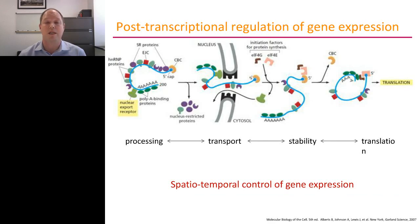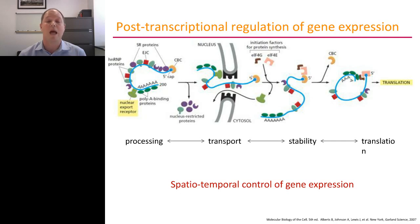All of these processes are part of the post-transcriptional regulation of gene expression, which is, in my view, as important as transcriptional regulation. Once you have an mRNA being transcribed within the nucleus, it's being processed — processing might be, for example, splicing. After processing, the mRNA is exported into the cytoplasm, and a partially overlapping set of trans-acting factors bind to the mRNA. Together they regulate, for example, the stability, but also the transport and eventually the translation of the mRNA. All of these individual steps together lead to spatial-temporal control of gene expression.